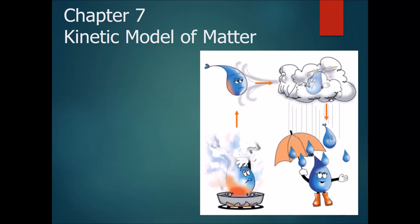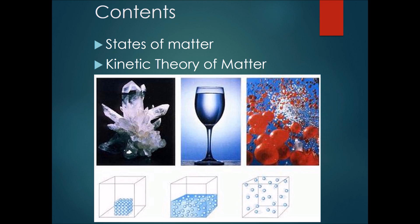Hi everyone, today we're going to be talking about Chapter 7, The Kinetic Model of Matter. To recap from your Sec 2 work, these are the three states of matter. The first one is a solid, the second one is a liquid, and the third one is a gas.